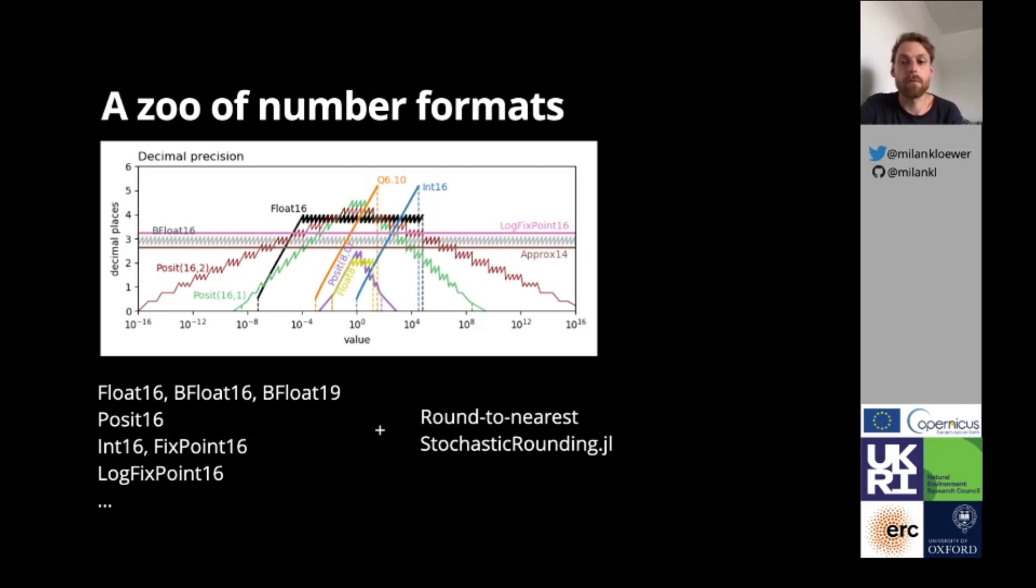Posits come with a pyramid-shaped decimal precision. They are a redesign of the floating point standard and provide more precision for numbers around 1 and less for very large and very small numbers. From the perspective of rounding errors, the best number format for a given application depends on the distribution of the underlying data. Integer or fixed-point arithmetic may be considered for a uniform distribution, which has a triangular shape in this logarithmic plot.